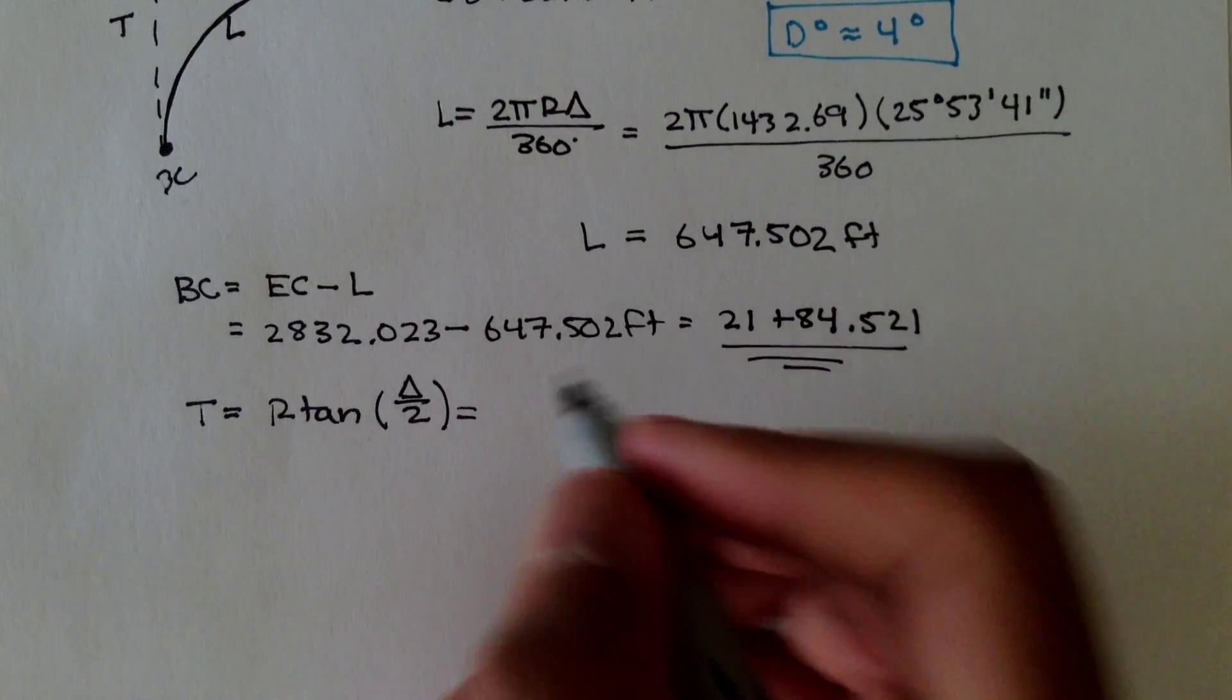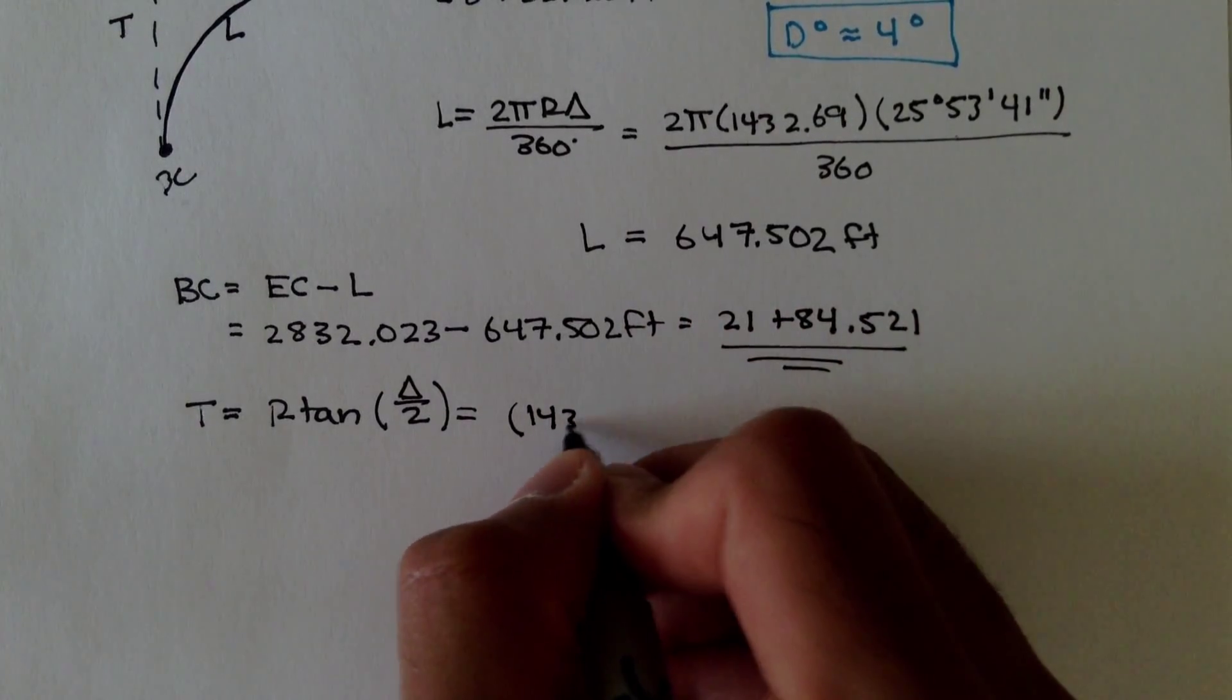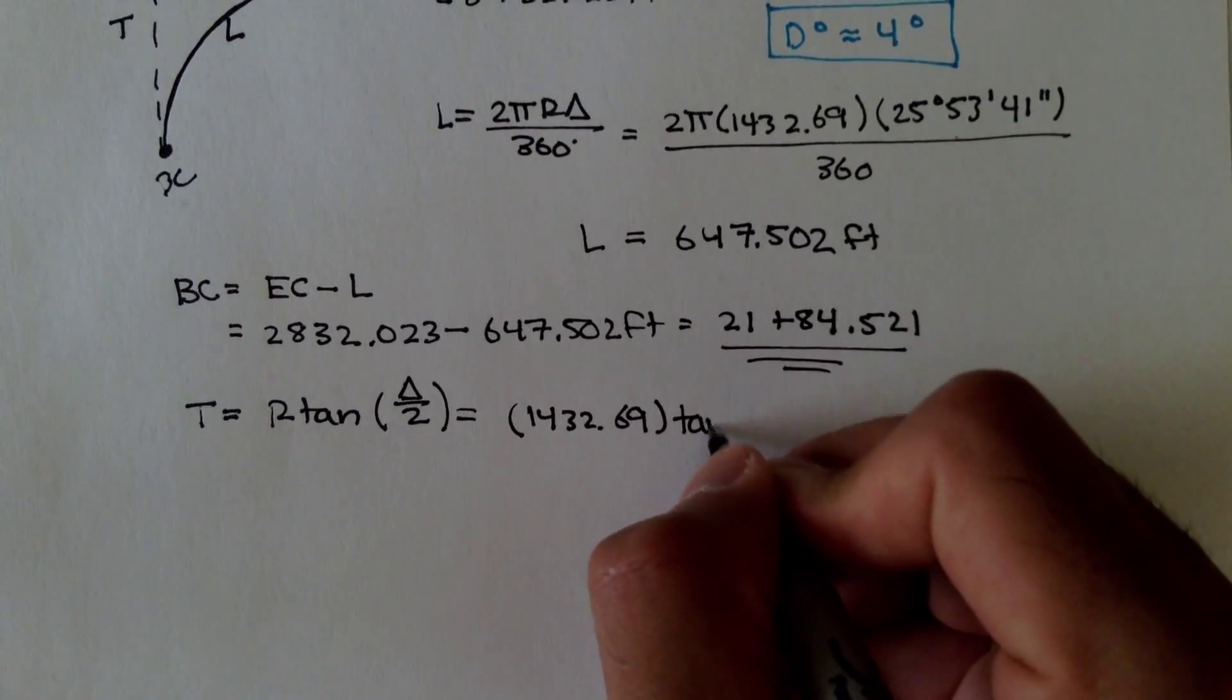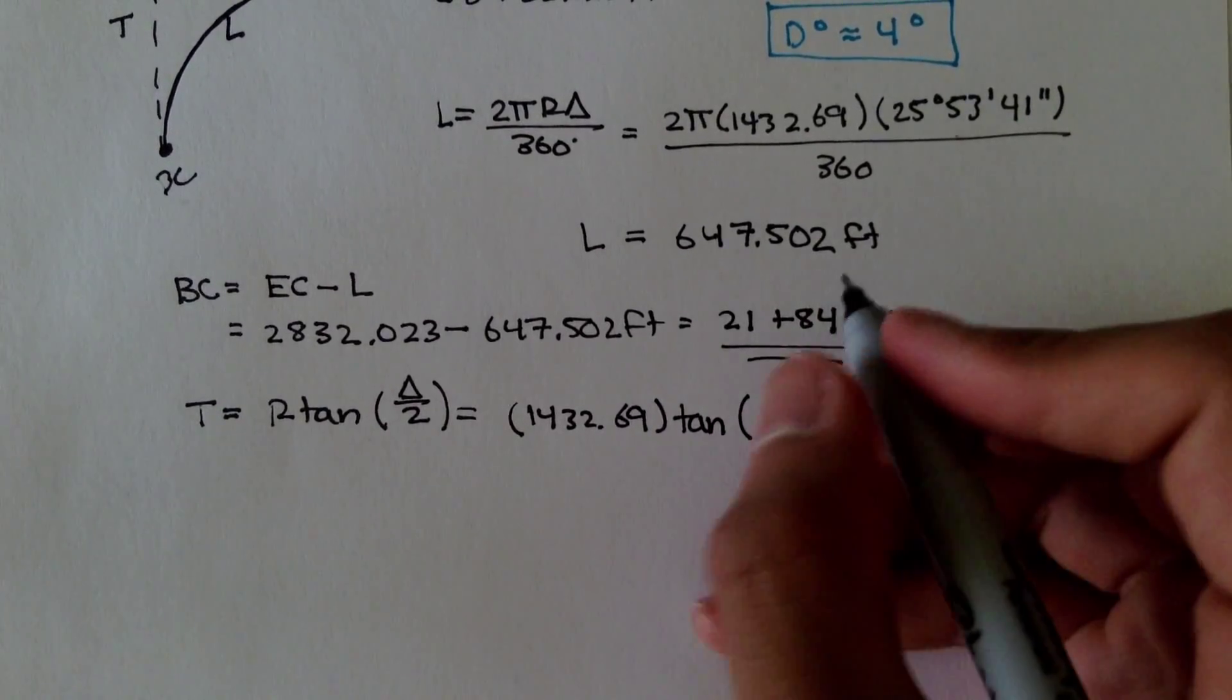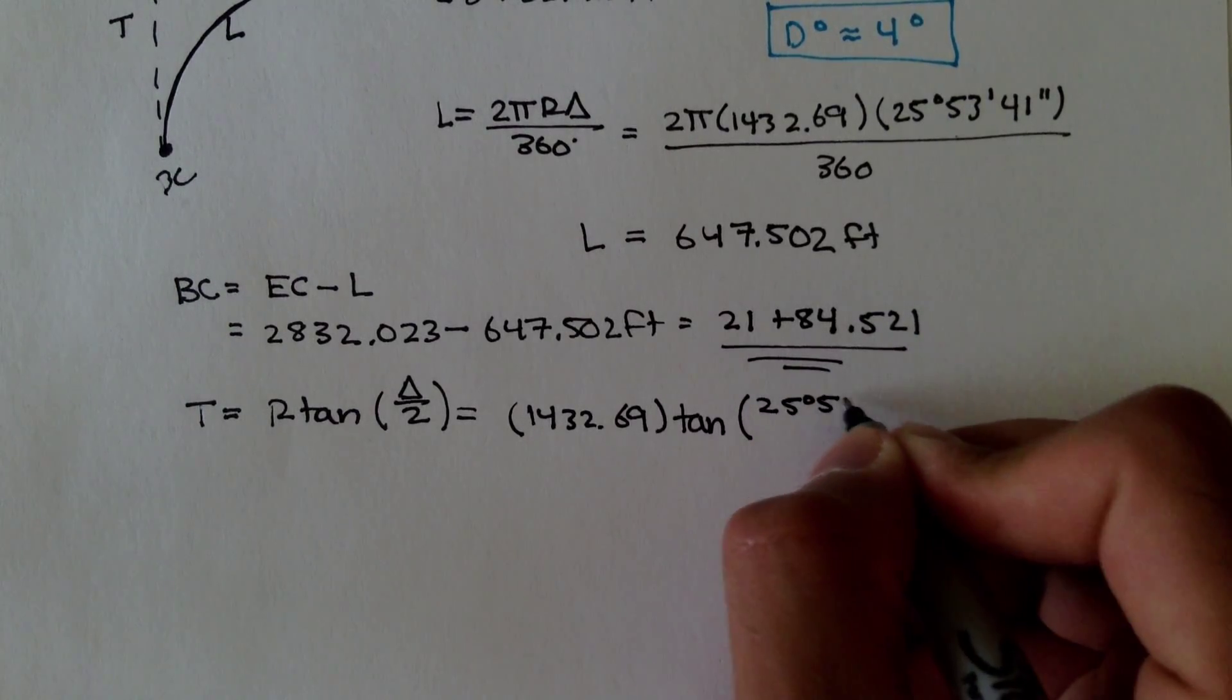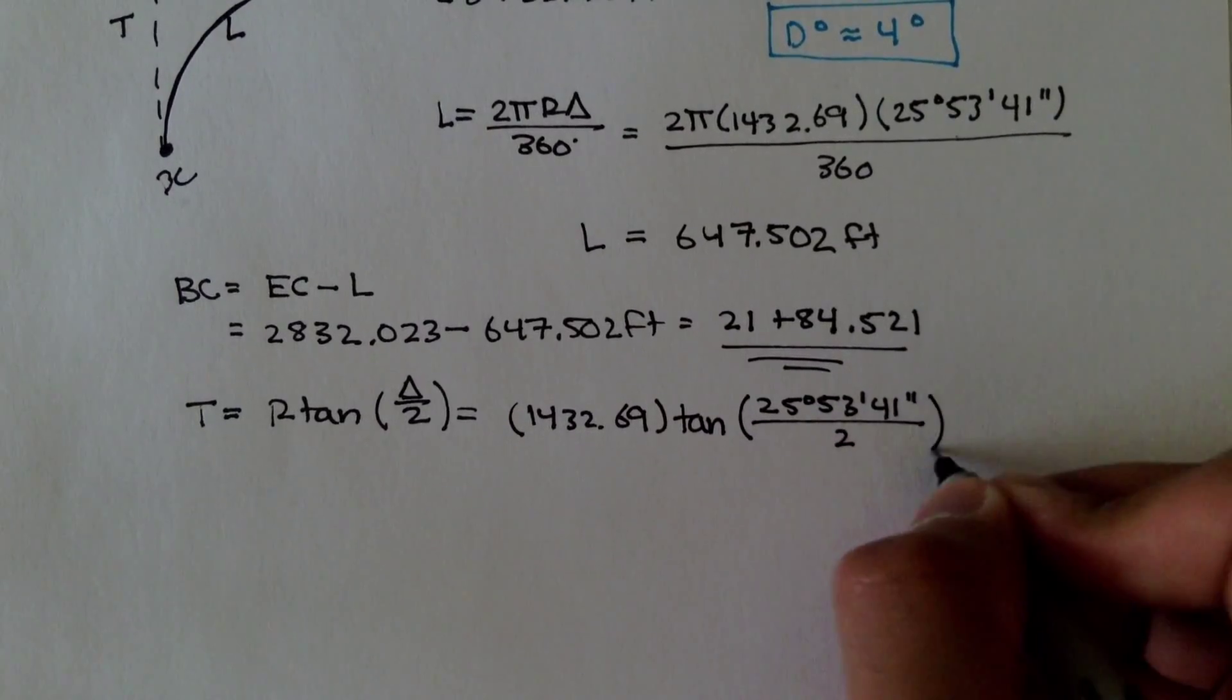So, we know what the radius is, and we know what the interior angle is. Plug those values in, and we can figure out what t is. Remember, our r is 1432.69 tangent of our interior angle, which was 25°53'41", divide that by 2.